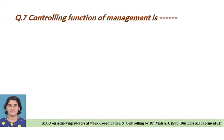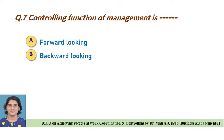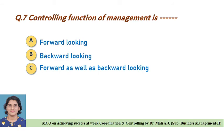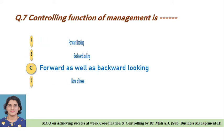Question seven: Controlling function of management is — Option A: forward looking, Option B: backward looking, Option C: forward as well as backward looking, Option D: none of these. Correct answer is Option C, controlling function of management is forward as well as backward looking.